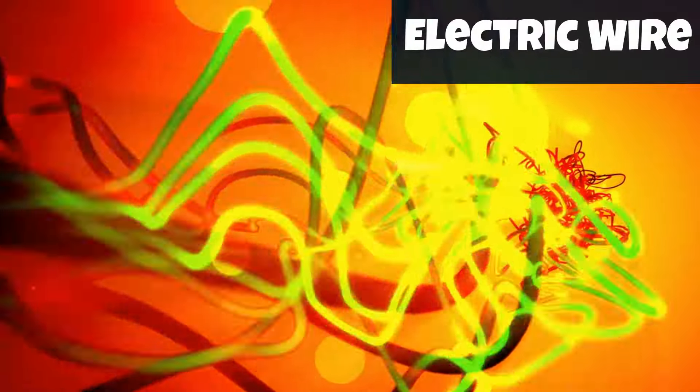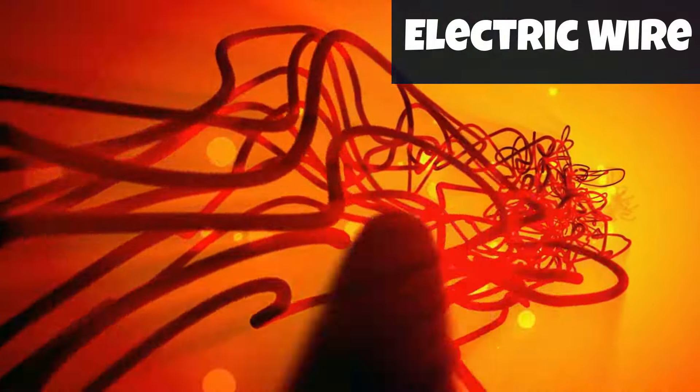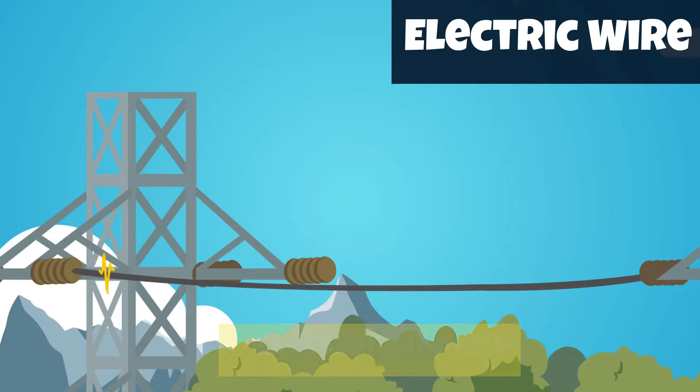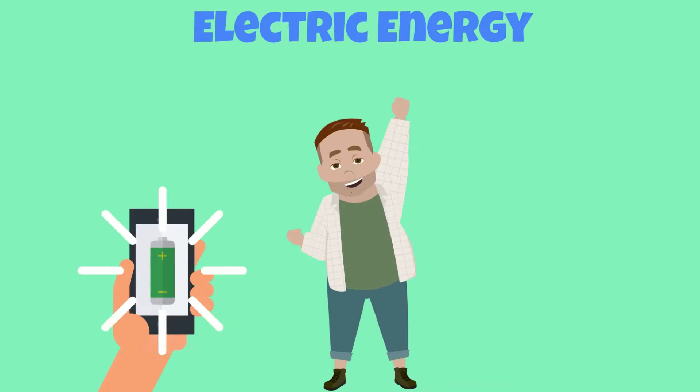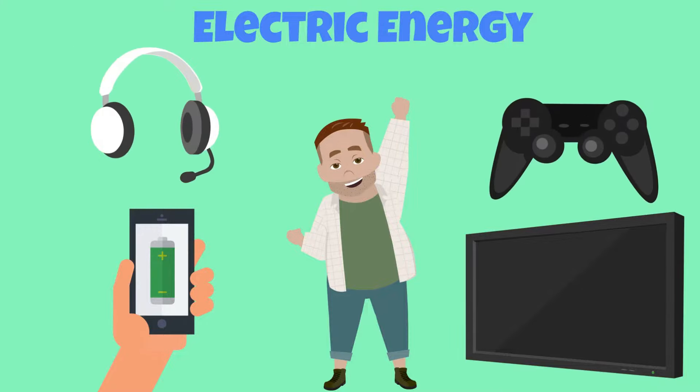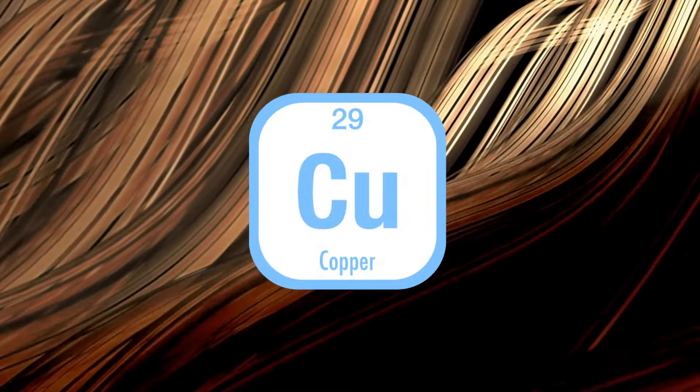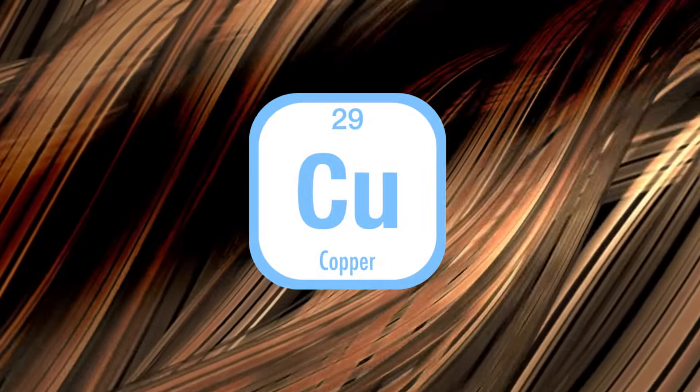A good example of this is electric wire. Electric wires conduct electric currents that can be used to power or charge your phone, TV, and other electronic devices. The most common metal used in electrical wires is copper because it is an excellent conductor.